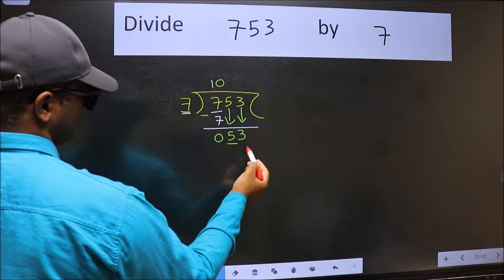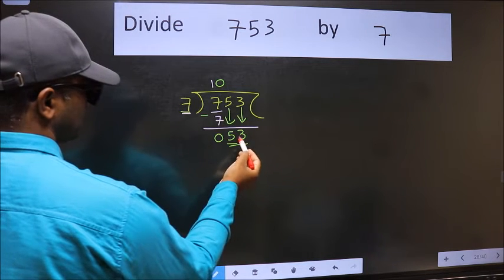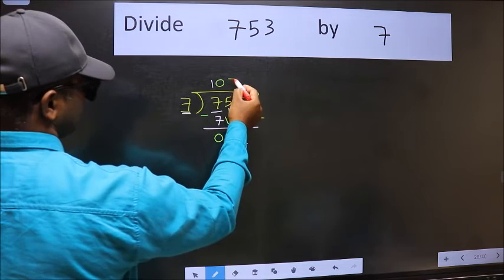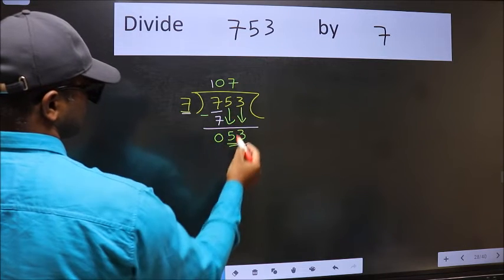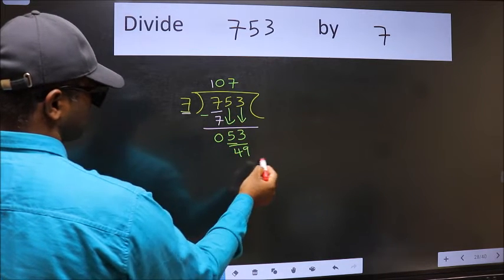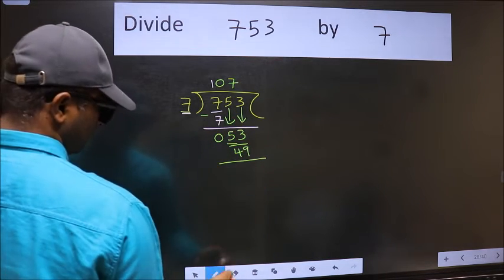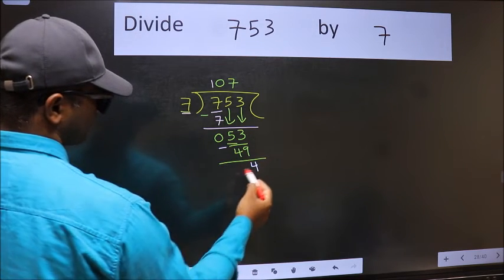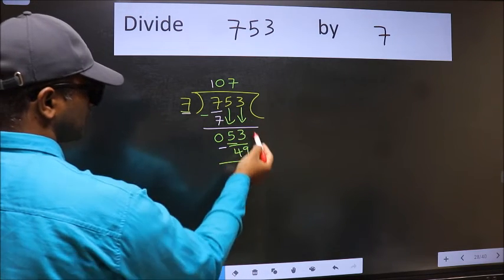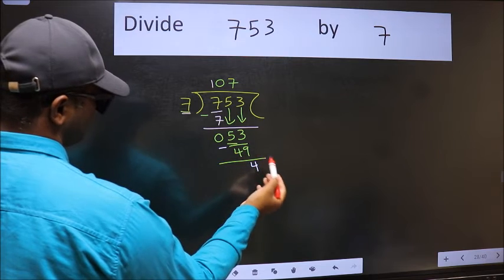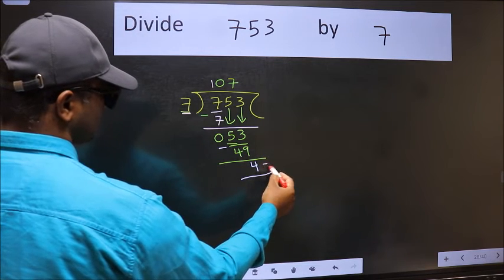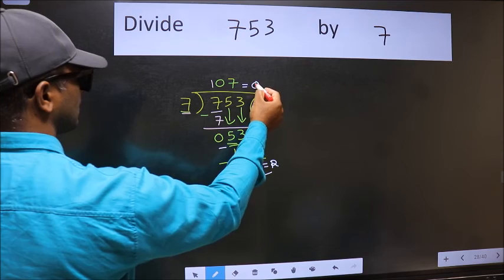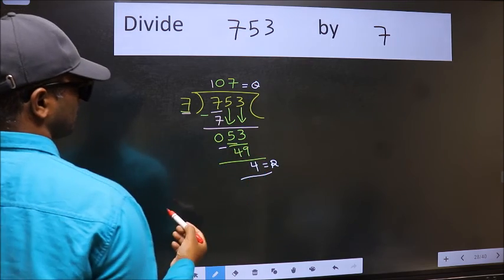Now we have 53. A number close to 53 in the 7 table is 7 × 7 = 49. We subtract and we get 4. There are no more numbers to bring down, so we stop here. This 4 is our remainder and this is our quotient.